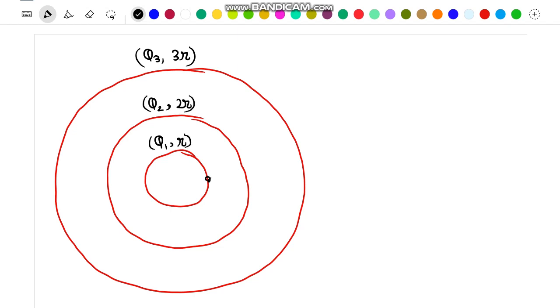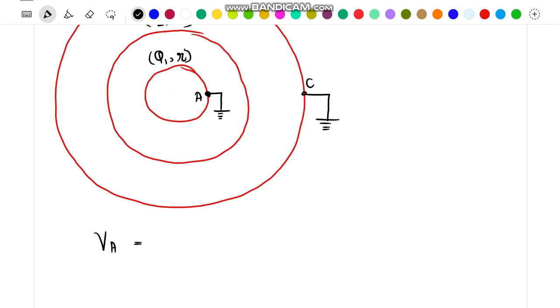Now it is given that point A as well as point C are connected to earth. From here we can write the potential of A. We know that the potential of A due to a system of this type of concentric spherical shells can be easily written. That will be equal to the sum of potential at point A created by all the three spherical shells. And since it is connected to earth, its net potential should be equal to zero.